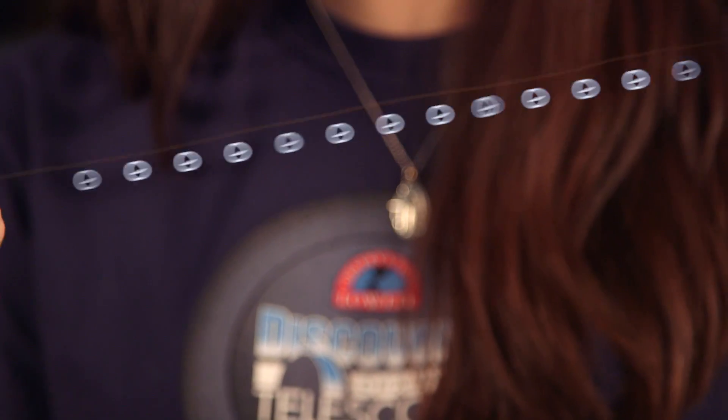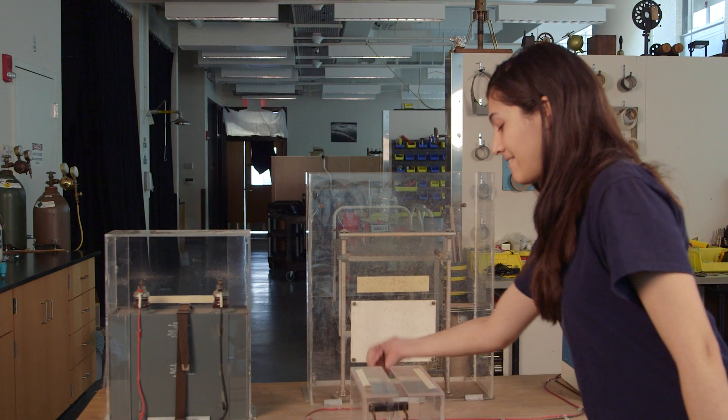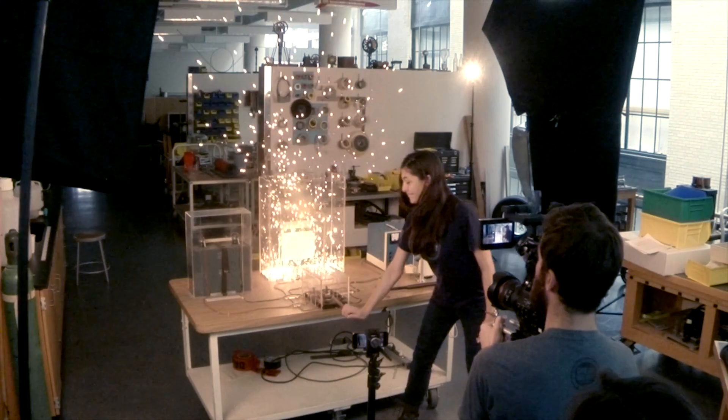When current flows through anything with resistance, even if it's just a little resistance, energy is dissipated in the form of heat. The huge amount of current leads to a huge amount of heat that the wire can't dissipate, so it explodes instead.